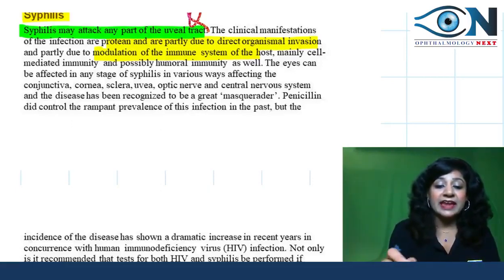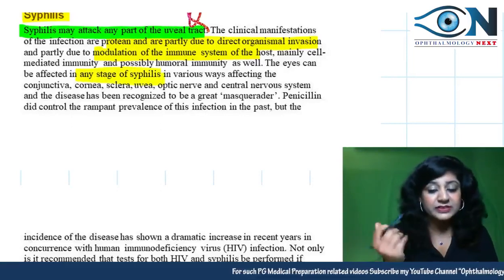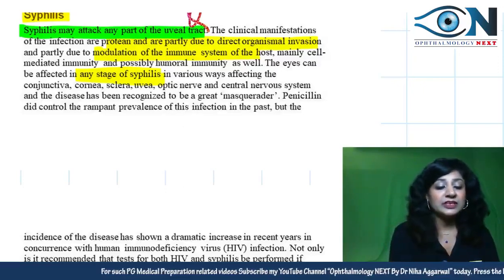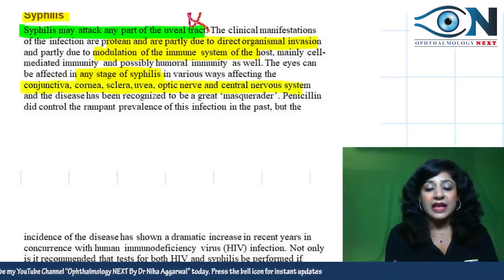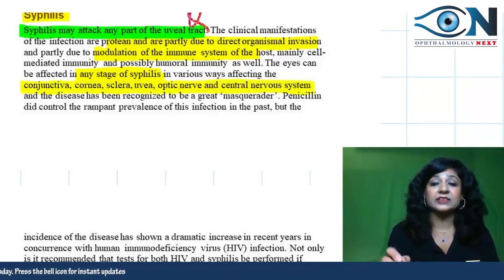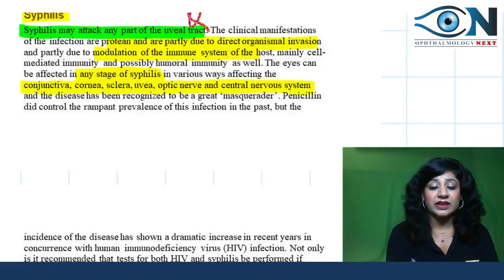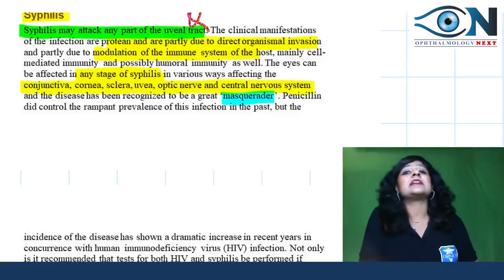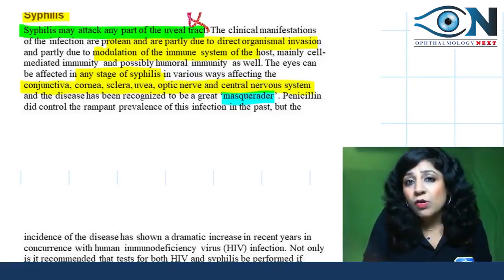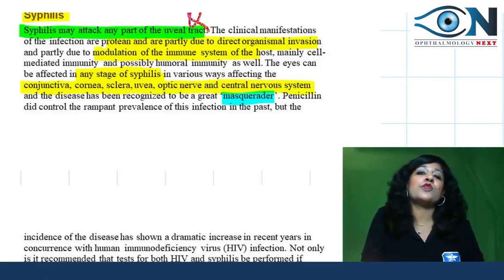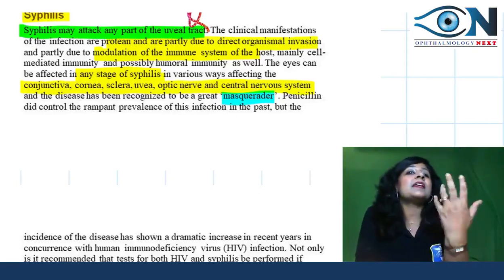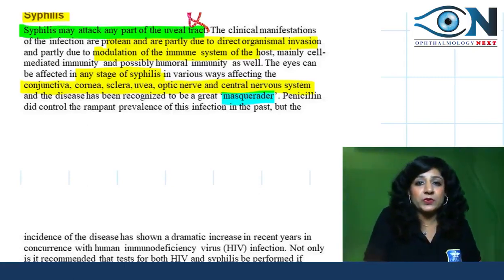The eyes can be affected in any stage of syphilis — the conjunctiva, cornea, sclera, uvea, optic nerve, and central nervous system can all be involved. Because a single disease is affecting so many organs with varied presentations, syphilis has been recognized as a great masquerader.